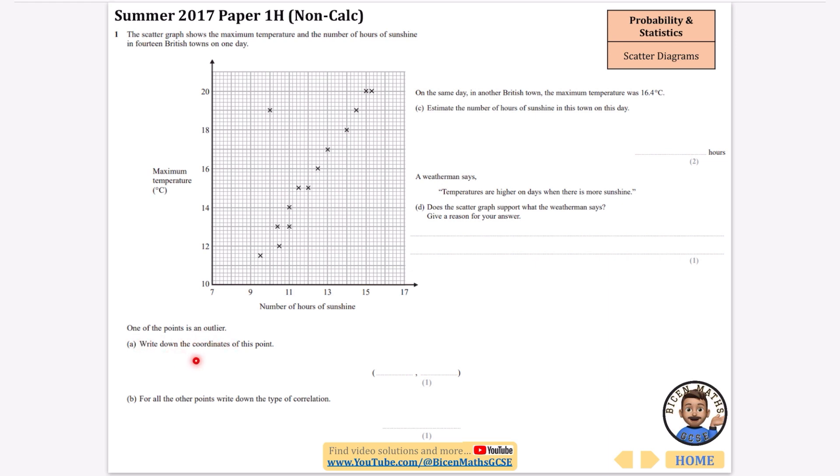One of the points is an outlier, write down the coordinates of this point. It's clearly talking about this one. The x coordinate is 10 and the y coordinate is 19, so it is just going to be 10, 19.